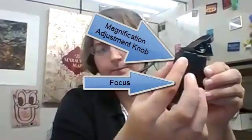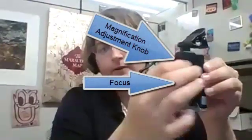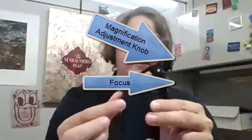So these two knobs right here are the focus. This one adjusts how large you see the image. It can go anywhere from 60 times to 100 times.